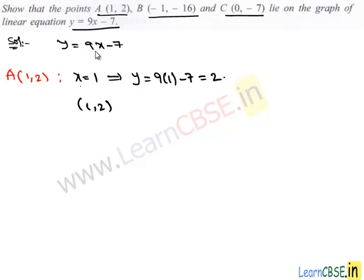(1, 2) is the solution of this equation, and we say that the point A lies on the graph of y = 9x - 7.